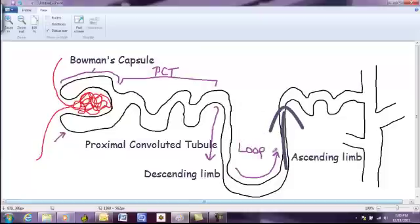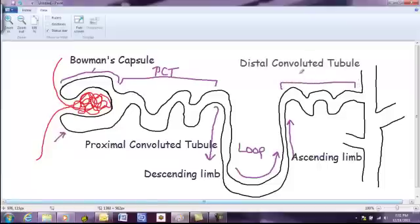After you hit the ascending limb, then you get another twisty, turny, windy tubule. If this one was proximal, what's this one going to be? Distal. So, this is the distal convoluted tubule. Okay? That's the basic structure of the nephron.